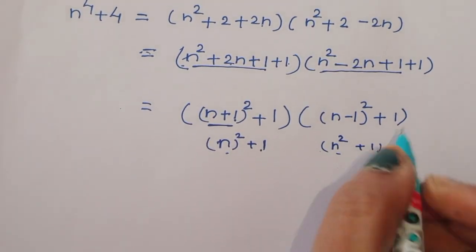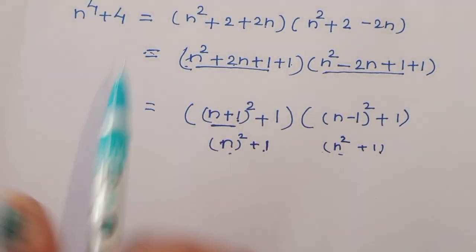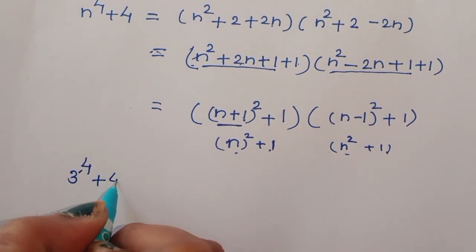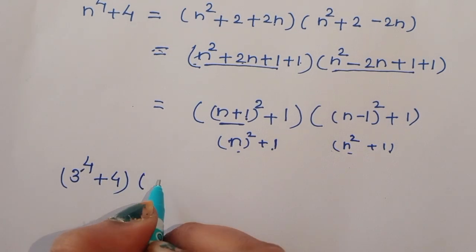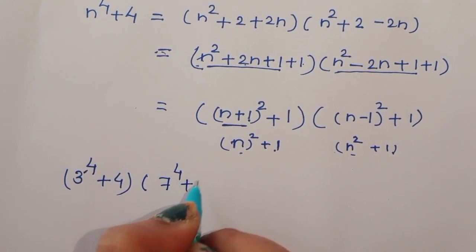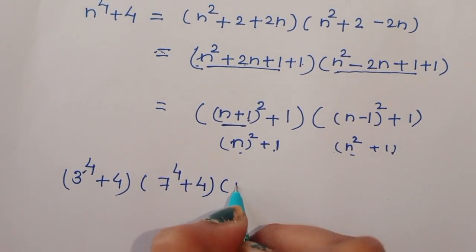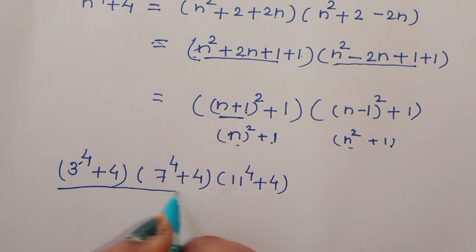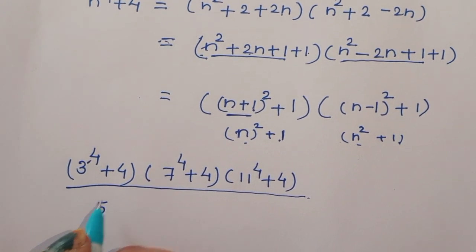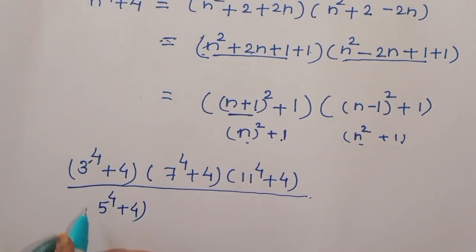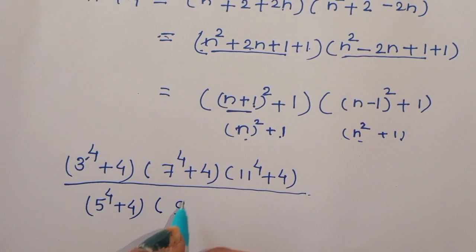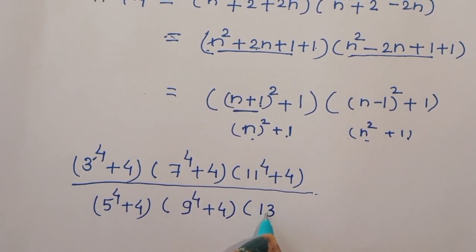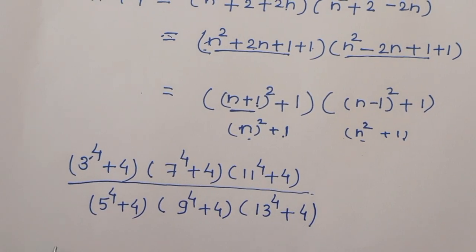Now we substitute this factorization into our original question: 3 power 4 plus 4 times 7 power 4 plus 4 times 11 power 4 plus 4, divided by 5 power 4 plus 4 times 9 power 4 plus 4 times 13 power 4 plus 4.